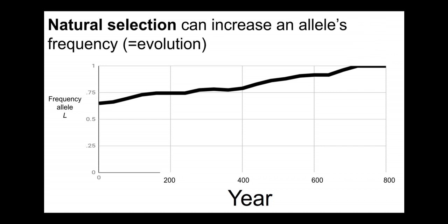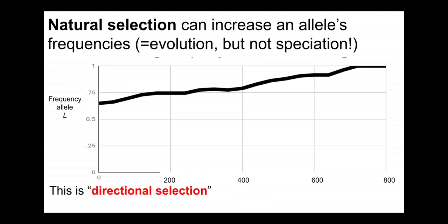Natural selection can increase an allele's frequency and cause evolution, but again this is evolution, not necessarily speciation. In the case of humans, not speciation at all — we only have a single human species. So we need to remember to unhitch these terms: natural selection, evolution, and speciation all have their own particular meanings.